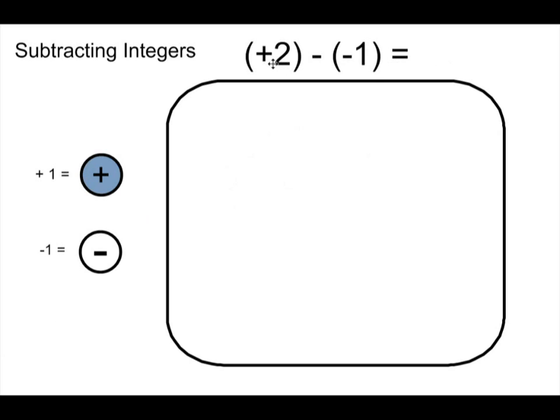One more example. Positive 2—actually not one more, this is our second last one—but positive 2 take away negative 1 equals. All right, let's go ahead and model it up. There's my positive 2. I've got to take away a negative 1 now from this positive 2. But just like before, I don't have any negative counters at all here. So I'm going to add a zero pair. Now I still have positive 2 inside the square.